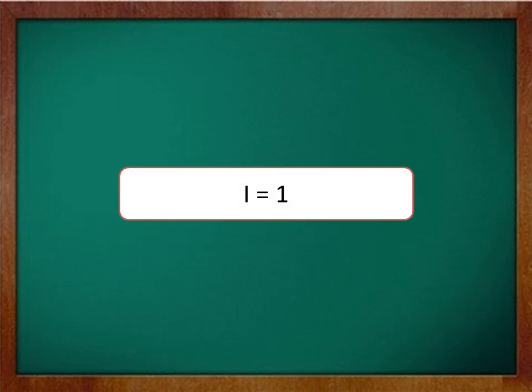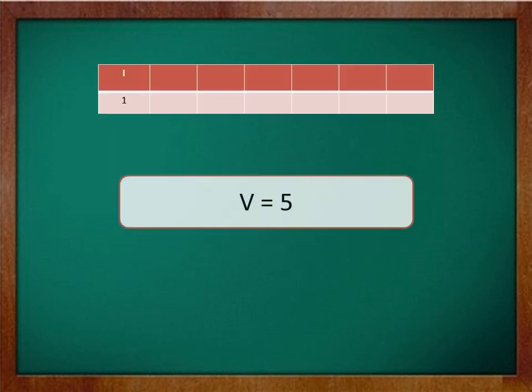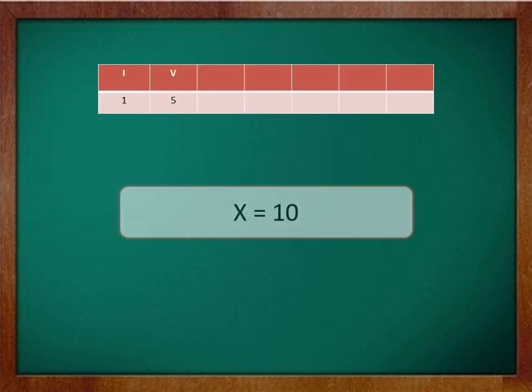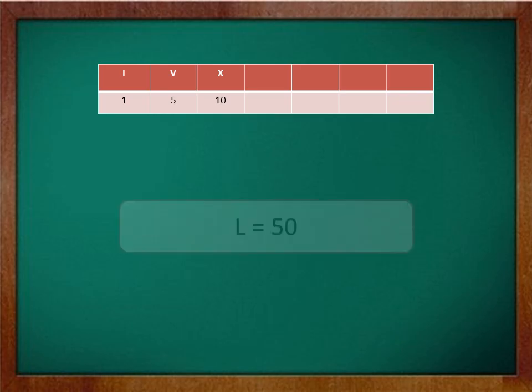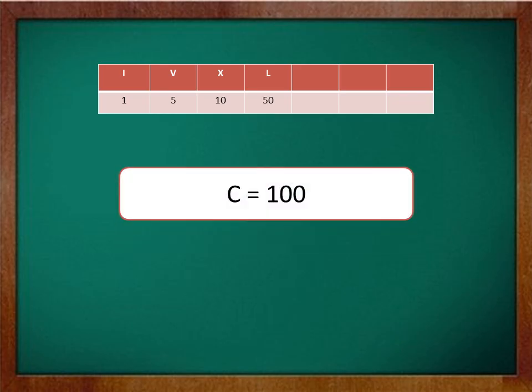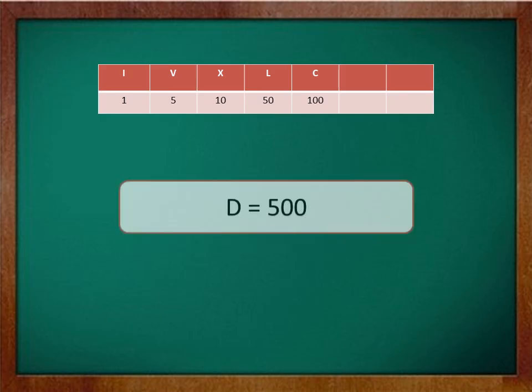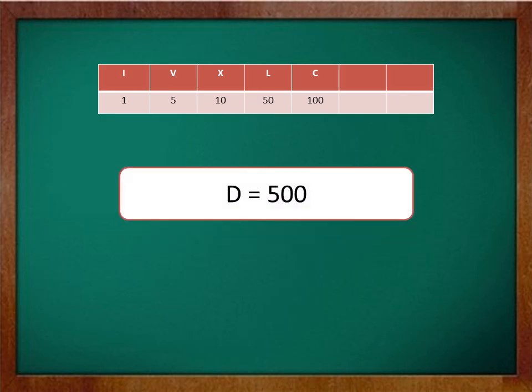First one is letter I which means 1. The second one is V which means 5. The third one is X which means 10. The fourth one is L which means 50. The fifth one is C which means 100. The sixth one is D which means 500. And the seventh one is M which means 1000.